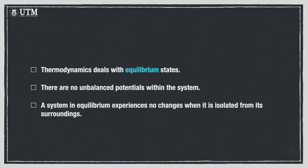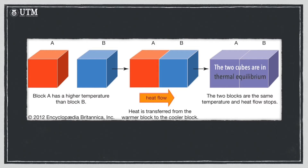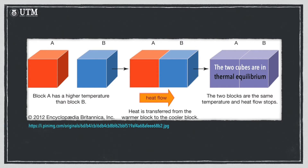A system in equilibrium encounters no changes when it is isolated from its surroundings. There are several types of thermodynamic equilibrium. For example, a system is in thermal equilibrium if its temperature is identical everywhere in the system. The system does not experience temperature difference, which is the driving force for heat flow.